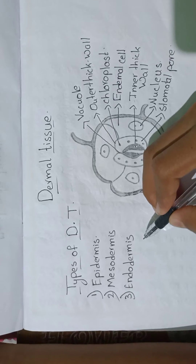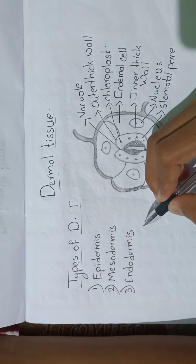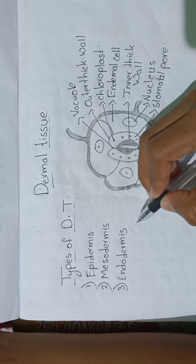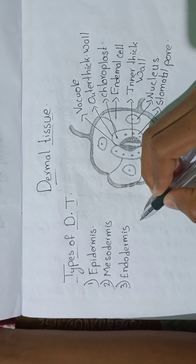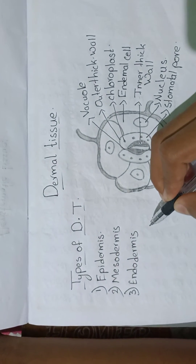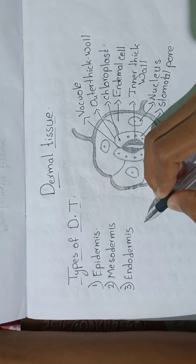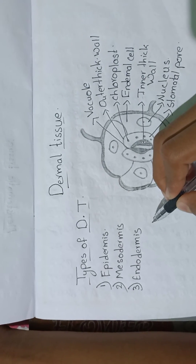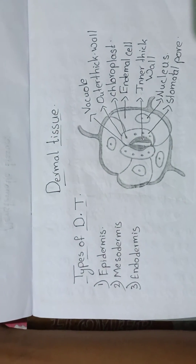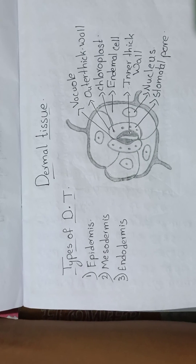Endodermis is the central innermost layer. It helps to regulate the movement of water and ions into and out of the vascular system. It may also store starch, and it protects the plant against toxic material moving into the vascular system.